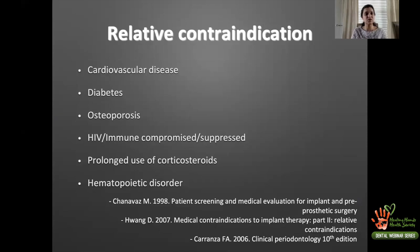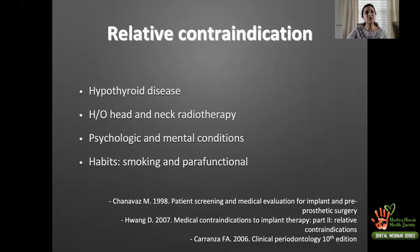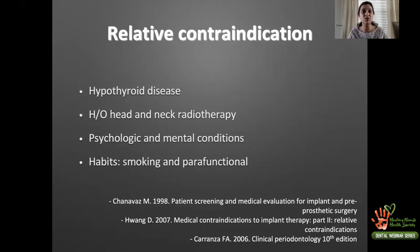Corticosteroids are a bit tricky and I'll return to them shortly. Other relative contraindications include hypothyroid disease, a past history of head and neck radiotherapy, psychological and mental conditions, smoking, and parafunction. Smokers in the relative contraindication category are those who are not heavy smokers but are still smoking enough to warrant a conversation between you and your patient.